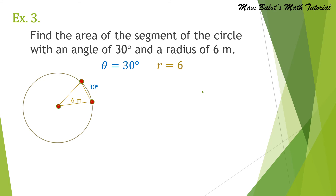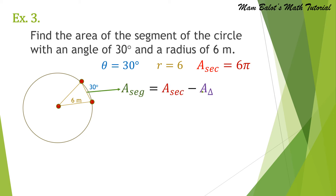Example number 3. Find the area of the segment of the circle with an angle of 30 degrees and a radius of 6 meters. This is the same example as number 2, where we computed the area of the sector. But this time we will compute the area of the segment formed by this example. Previously, we found that the area of the sector is equal to 6 pi. So now the area of the segment equals the area of the sector minus the area of the triangle, where the area of the triangle is base times height divided by 2.